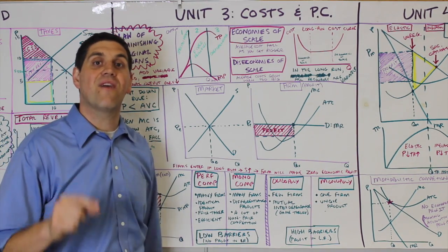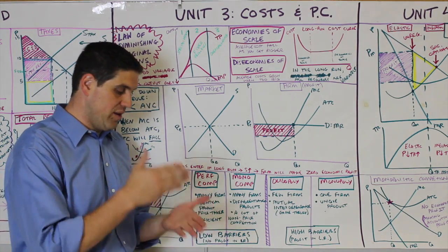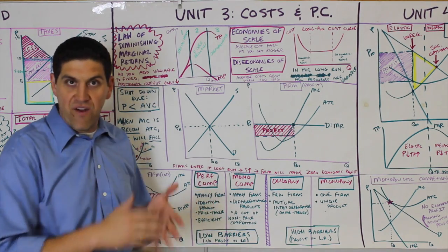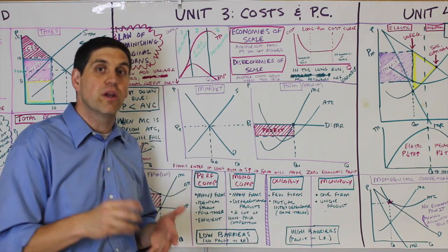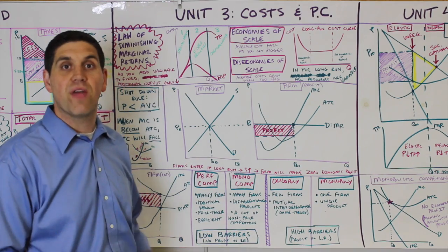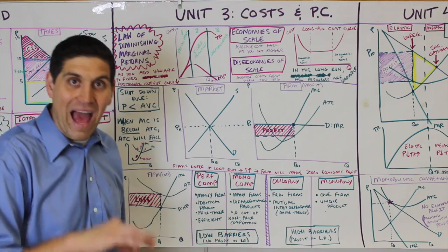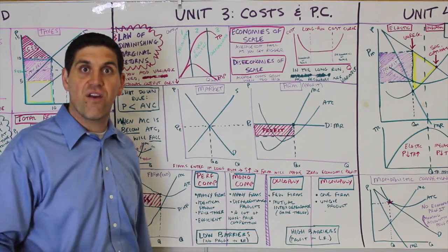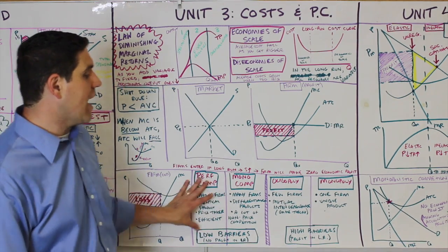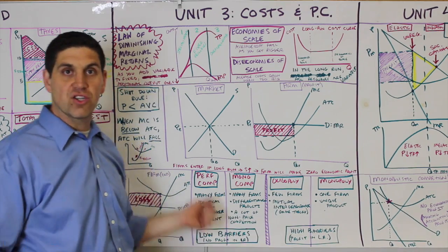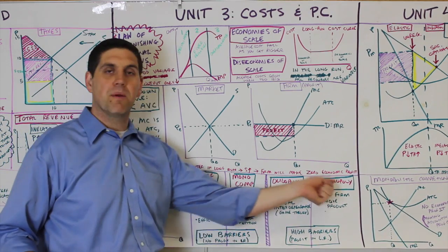What's also important: if given fixed cost, variable cost, and price, you need to figure out how many units to produce. You should also be able to calculate average cost, average variable cost, and average total cost. Down here are the characteristics of the four market structures: Perfect Competition, Monopolistic Competition, Oligopoly, and Monopoly.